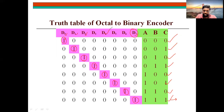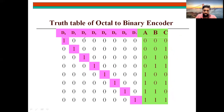Suppose you take D4 as highlighted: 4 is the index value, so convert 4 into binary form — 100 — and that will be your output. For D3 highlighted, 3 is the index value, and the binary format of 3 is 011, which will be obtained at your output. So this is the truth table of the octal-to-binary encoder.